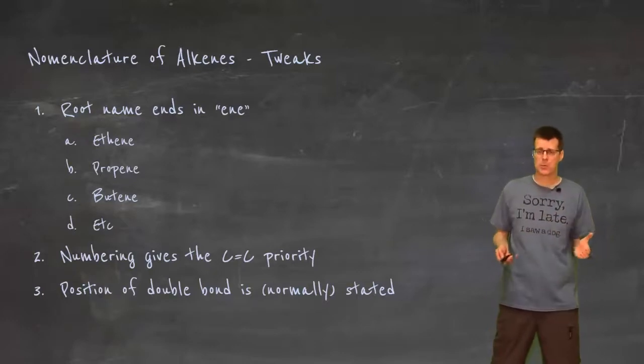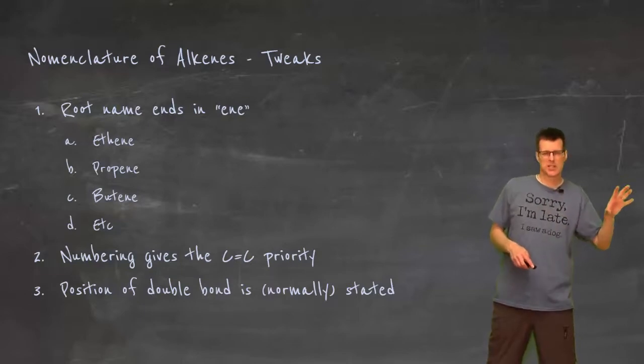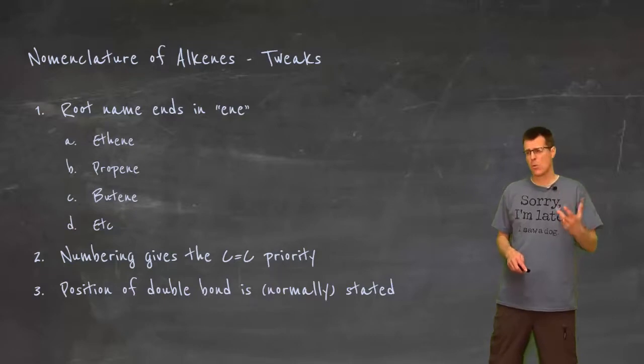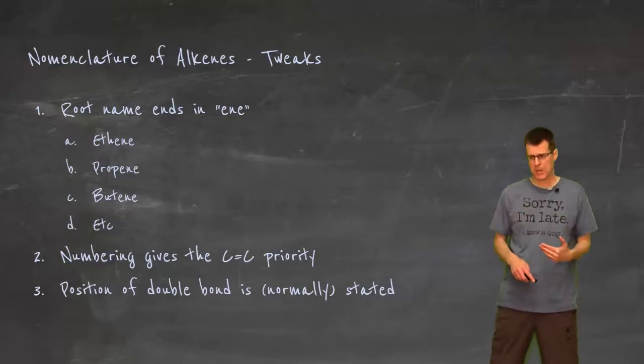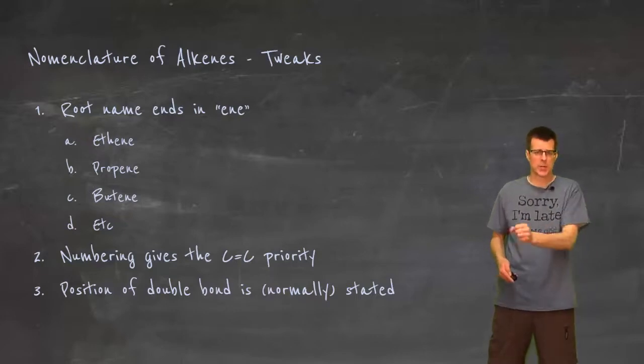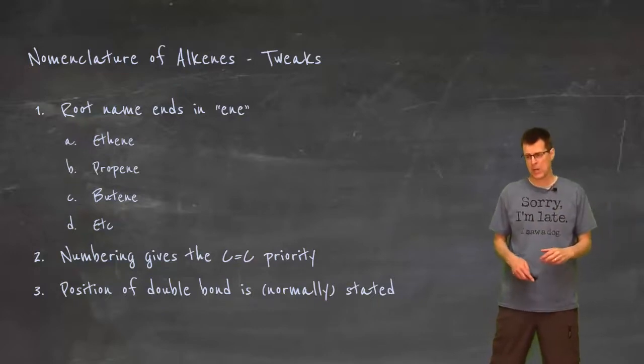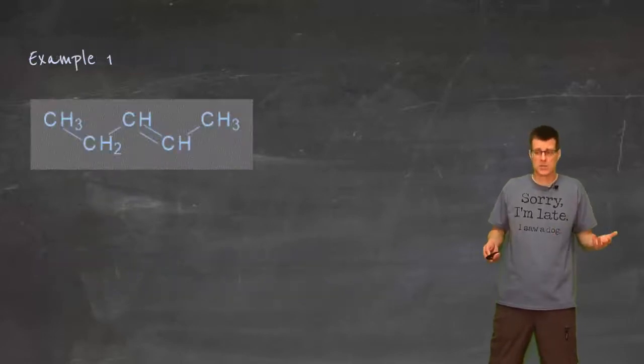Alkene nomenclature. This is where we are going to spend some time. All we really have to do is take exactly the same principles that we had for alkane nomenclature and tweak it. One of the things is the root name is going to end in -ene. So instead of an ethane, it's an ethene. Instead of a propane, propene. The numbering gives that carbon-carbon double bond priority because that changes the functional group. So it's more important than a carbon group, it's more important than a chloro group. And then the position of the double bond is going to need to be stated.